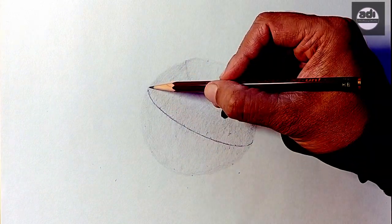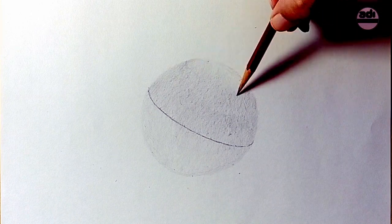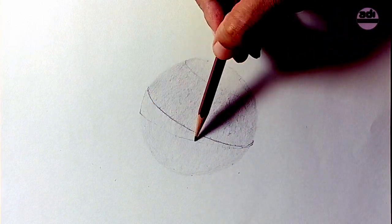You will then use the HB pencil to draw in the terminator or shadow line. You will then add the core shadow using the 2B pencil. You will do this exercise every day.